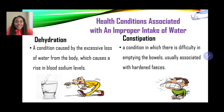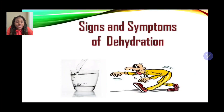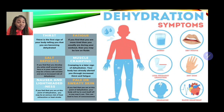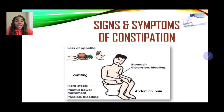Now let's look at the signs and symptoms of dehydration. The first sign is thirst — from the moment you start to feel thirsty, that's the first point of dehydration. Other symptoms include fatigue, muscle cramping, dry skin, dry mouth, less frequent urination, headache, rapid heartbeat, nausea, and lightheadedness. All of these are signs and symptoms of dehydration.